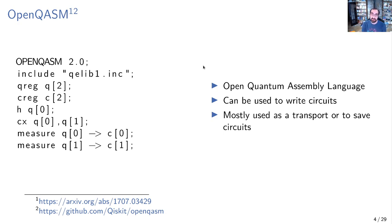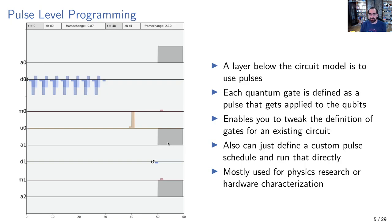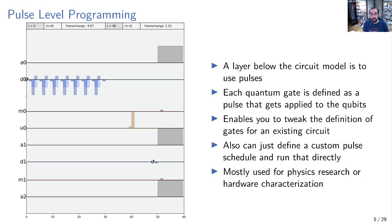From a compiler standpoint, OpenQASM isn't super interesting — it just ends up being a parser, and parsers, while there's work that goes into them, aren't as interesting as the other things we'll cover. The other level people program quantum computers at is the pulse level. All those gates can be represented as microwave pulses applied to the qubits — that's how you transform the quantum state. If you're working at a really low level, you can define your own pulses, apply them, and measure. This is mostly used for physics research and hardware characterization. We won't be talking about this, though there are interesting scheduling problems around going from a circuit representation to a pulse level representation.